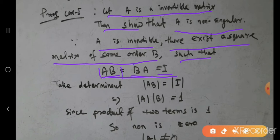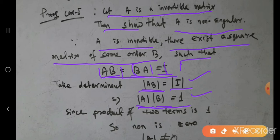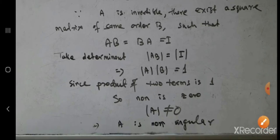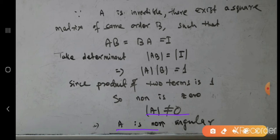Now take the determinant of both sides. det(AB) = det(I) = 1. We also know the theorem that det(AB) = det(A) · det(B). So the product of det(A) and det(B) is 1. Since the product of two values is 1, none of these can be 0. Therefore det(A) ≠ 0, which means A is a non-singular matrix.